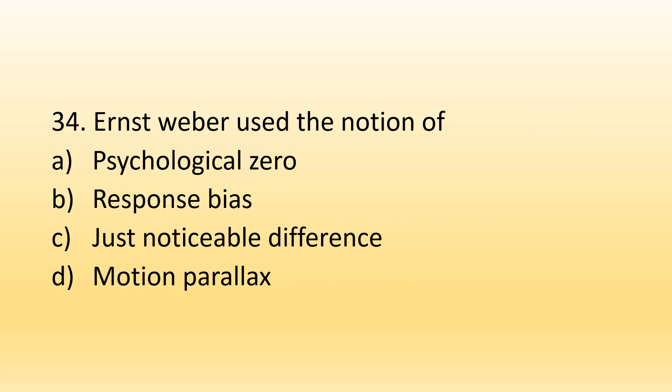Number 34. Ernest Weber used the notion of: Option A, Psychological zero; Option B, Response bias; Option C, Just noticeable difference; Option D, Motion parallax. The right option is Option C, Just noticeable difference. Just noticeable difference is also called JND or difference threshold. For example, a person carrying two weights in their hands — the minimum detectable difference between the two weights is the just noticeable difference.